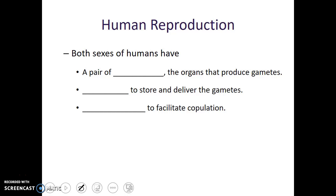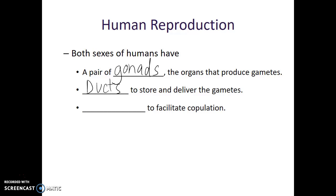Both sexes in humans have a pair of gonads. These are the organs that produce gametes, and also the structures that produce the sex hormones. These are a paired structure in both males and females, with one on the right side of the body and one on the left side. Both sexes also have ducts or tubes to store and deliver the gametes during copulation or sexual intercourse, and structures to facilitate copulation or sexual intercourse.